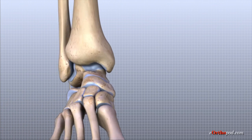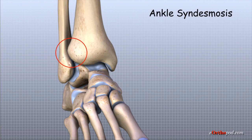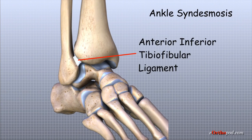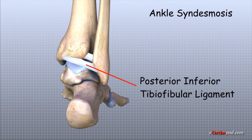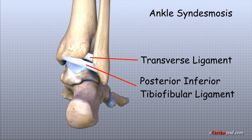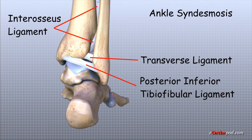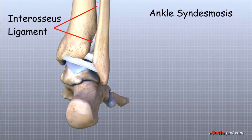Ligaments are also important in connecting the distal tibia and distal fibula at the lower end of the leg where it forms the ankle mortise. This connection and the collection of ligaments that support it are called the ankle syndesmosis. Three main ligaments form the syndesmosis: the anterior inferior tibiofibular ligament connects the tibia to the fibula and crosses above the front of the ankle; the posterior fibular ligaments connect the tibia and fibula behind the ankle joint, including the posterior inferior tibiofibular ligament and the transverse ligament; and the interosseous ligament, a long sheet of connective tissue that connects the entire length of the tibia and fibula from the knee to the ankle.